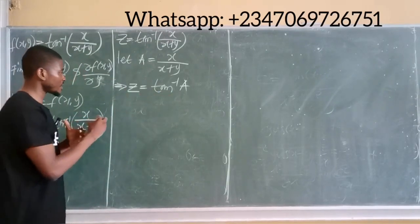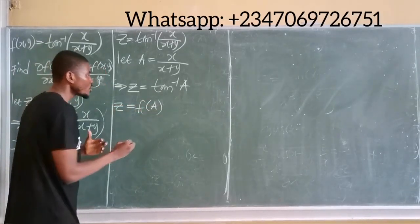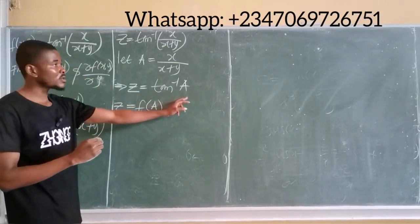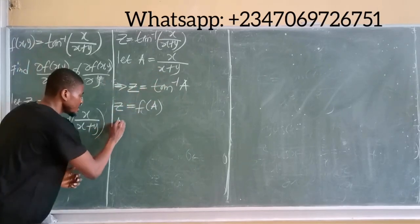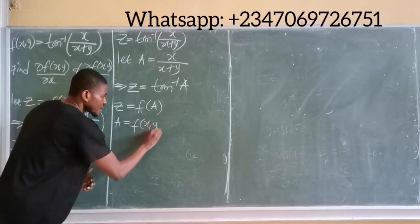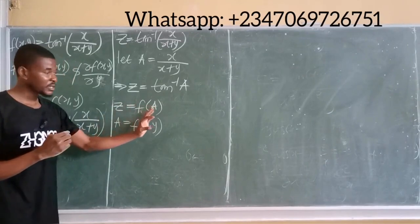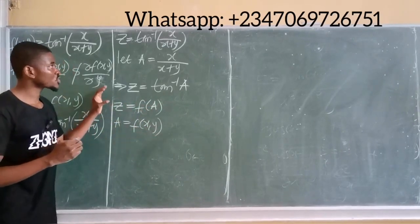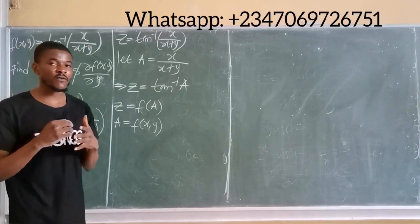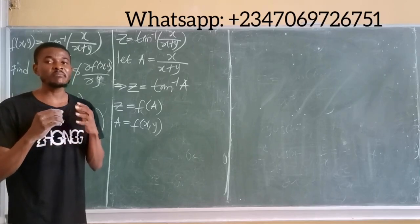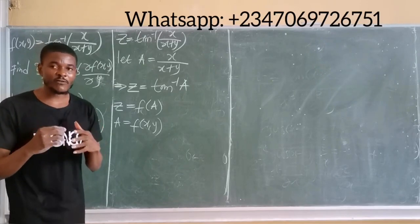We notice that z is a function of a, which means z depends on a to be defined. Also, a is a function of both x and y. So when z is a function of a, and a is a function of x and y, such a situation is what we call a function of functions. Whenever we have a function of functions in calculus, the method we employ is simply the chain rule of partial derivatives.